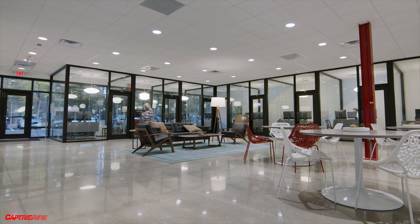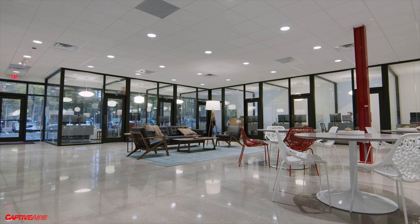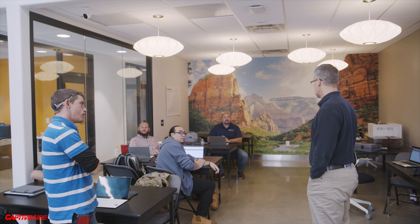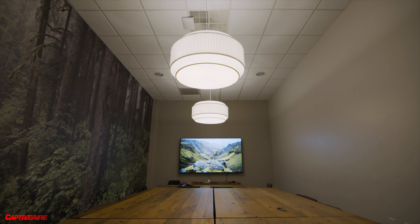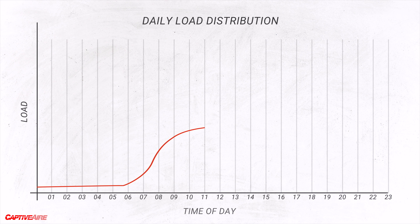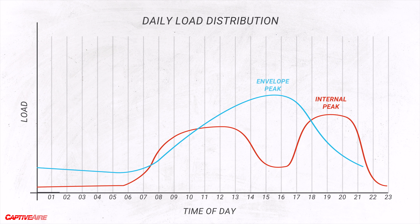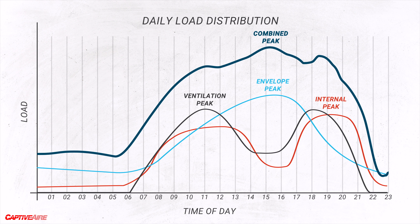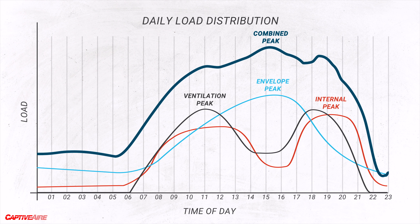When looking at internal loads, we have to understand that many are time-based loads that can change throughout the day. Even in an office building or school, certain rooms may be busier at certain times of day, and the peak on internal loads might not coincide with the peak on envelope or ventilation loads. We need to take the aggregate of where that peak falls for internal versus ventilation versus envelope loads, and design for that peak combined load based on those times throughout the day.